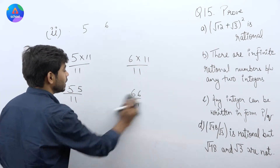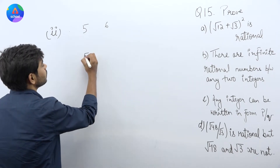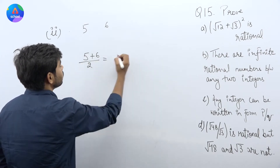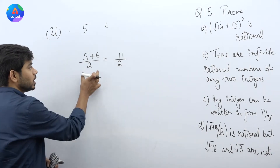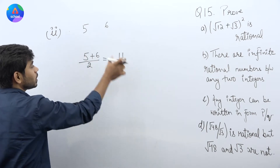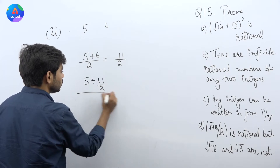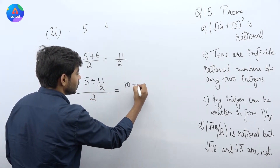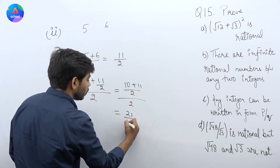इसको find करने का एक और तरीका है — to prove it, हम दोनों का mean ले लेंगे: (5 + 6)/2 = 11/2. यह एक rational number मिल गया इनके बीच में। अब 5 और 11/2 का mean लेंगे: (5 + 11/2)/2 = (10/2 + 11/2)/2 = 21/4.